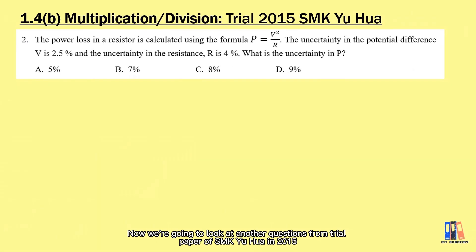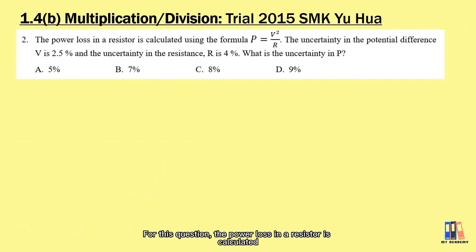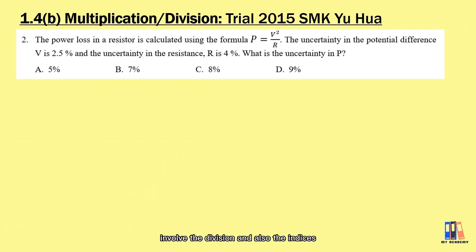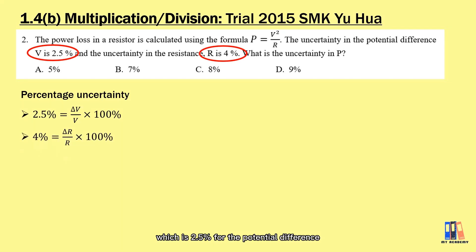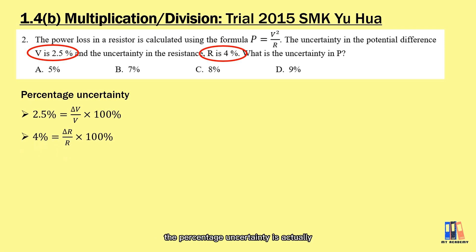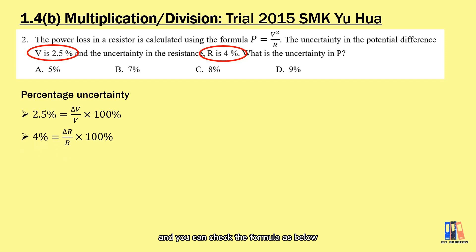Now we're going to look at another question from the trial paper of SMK Yuhua in 2015. The power loss in a resistor is calculated using the formula P = V²/R. The calculations involve division and also indices — the power of 2. We are given the percentage uncertainty of 2.5% for the potential difference and 4% for the resistance. The percentage uncertainty is the fractional uncertainty multiplied by 100%.